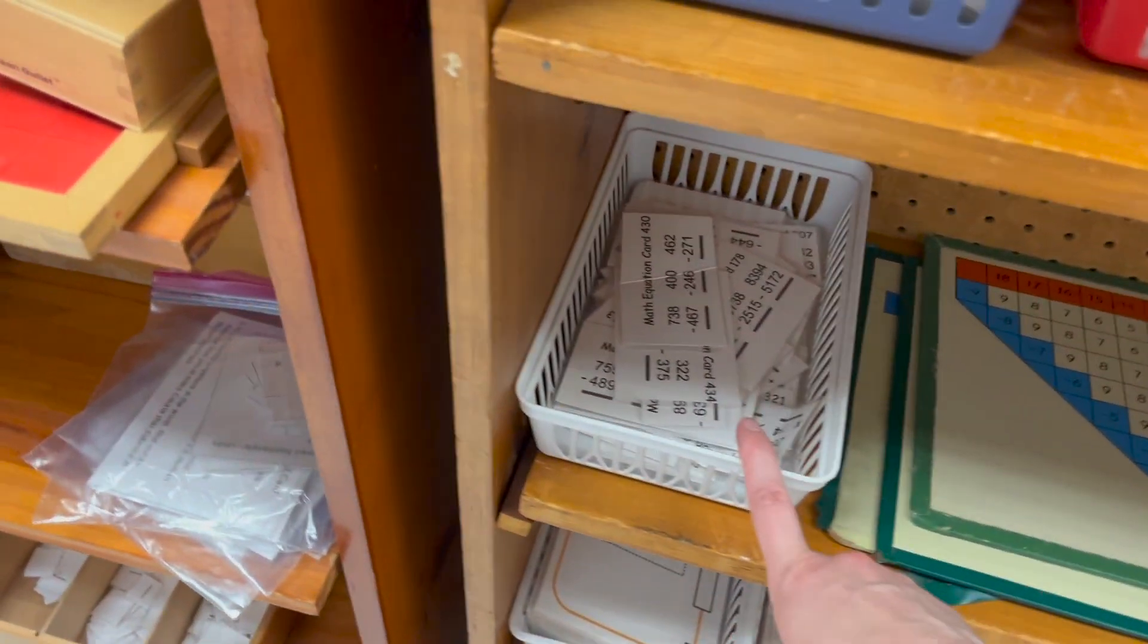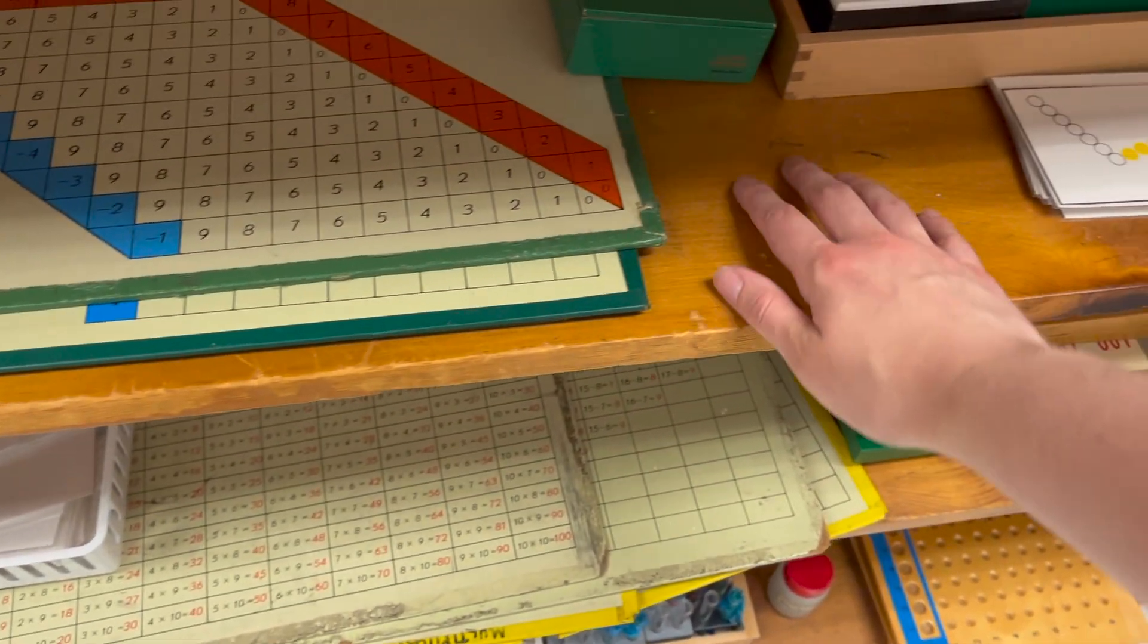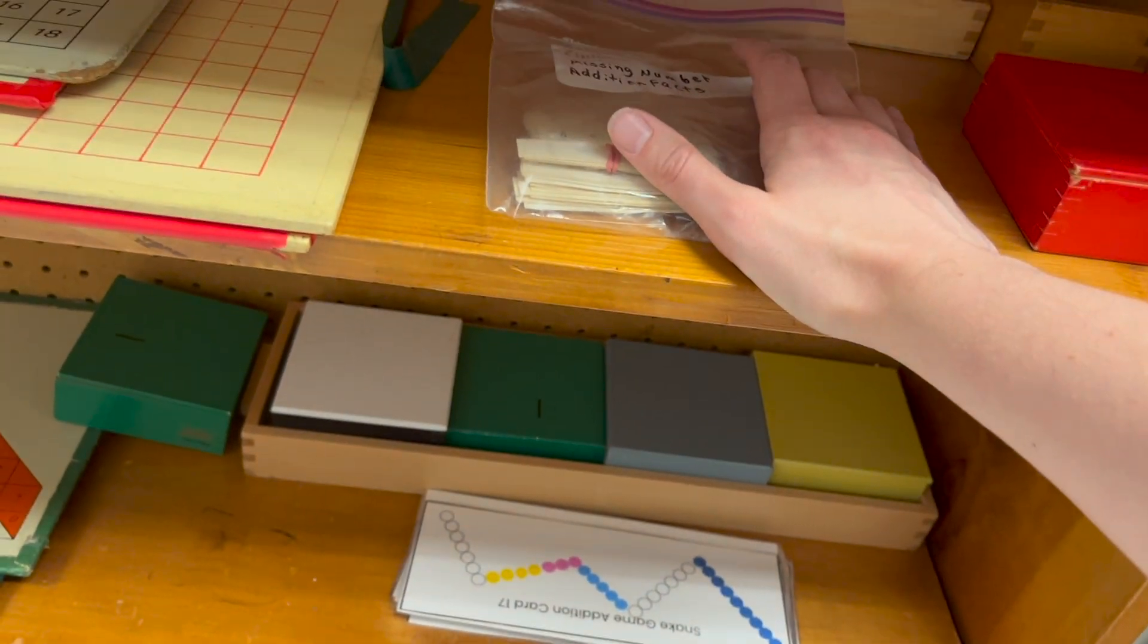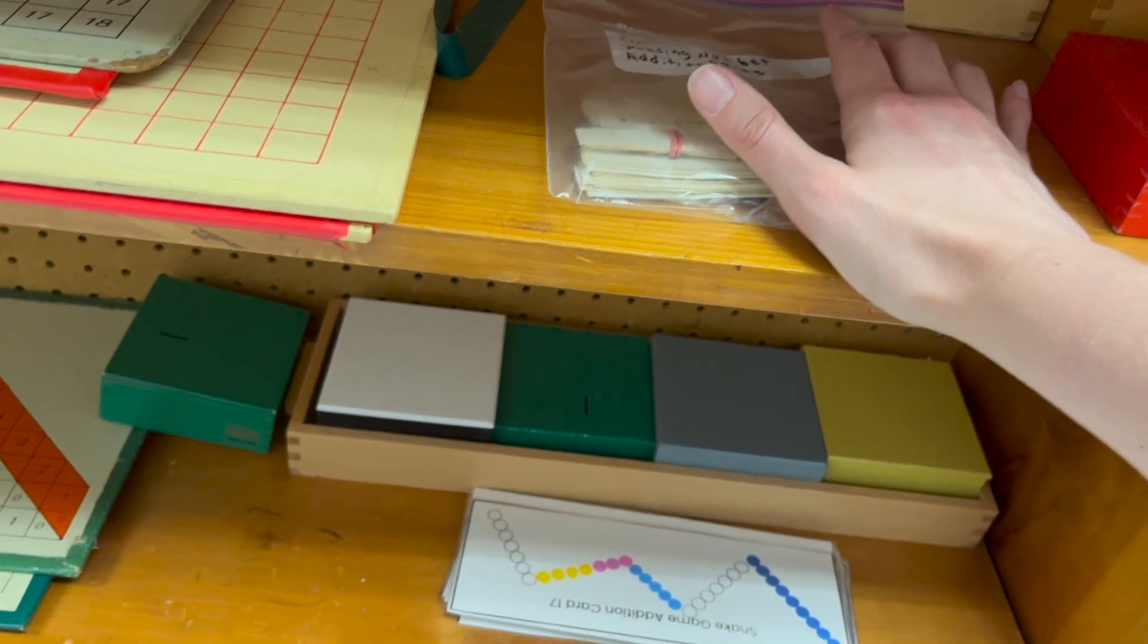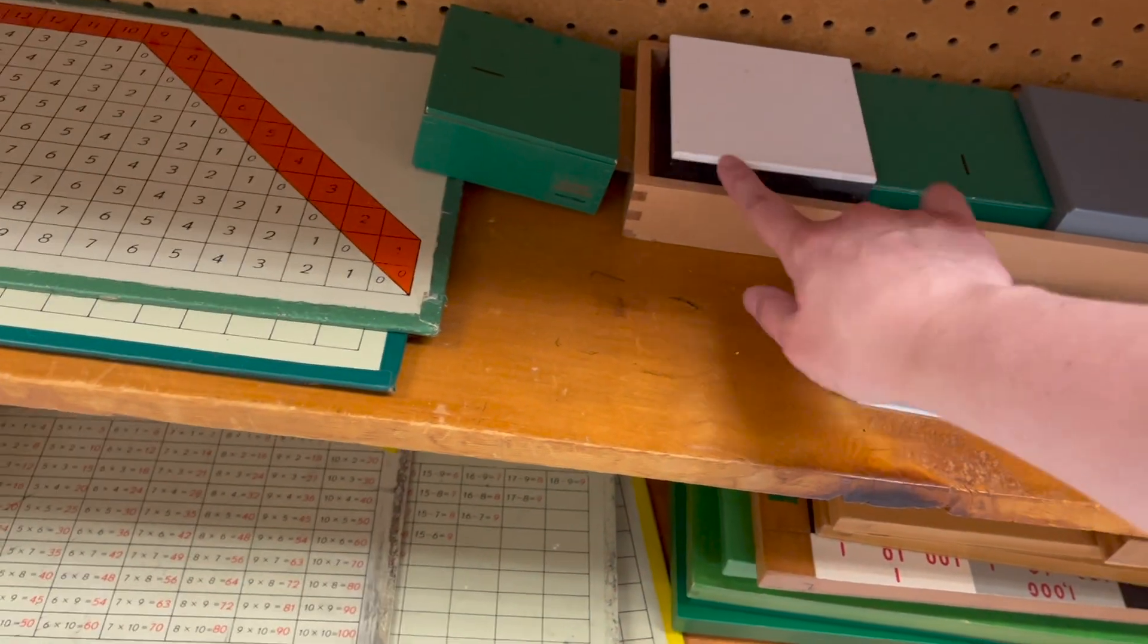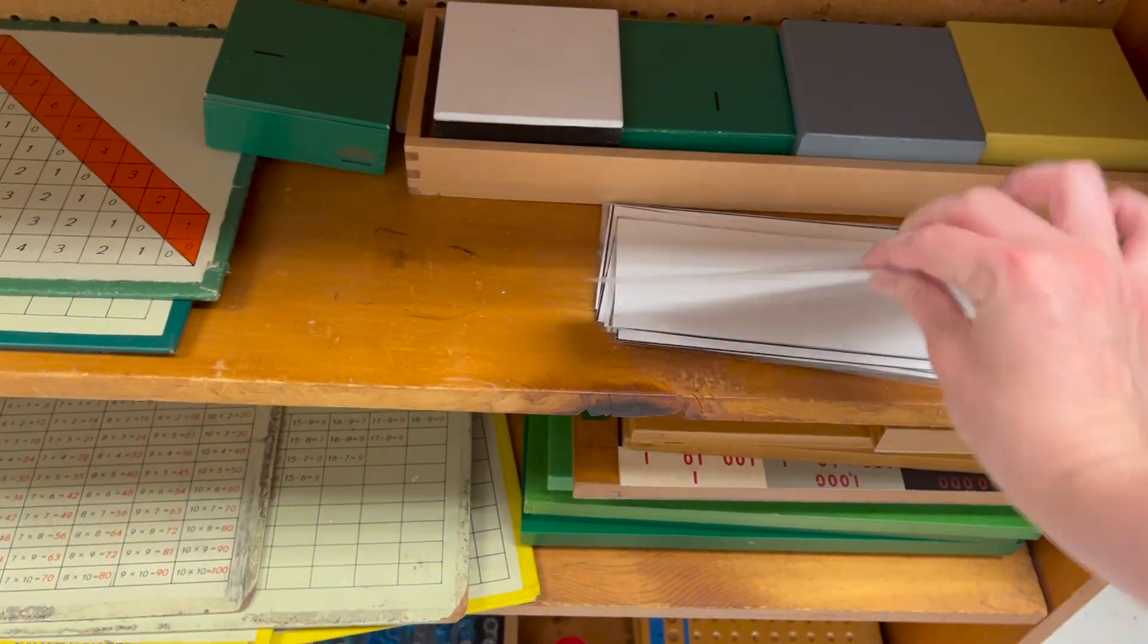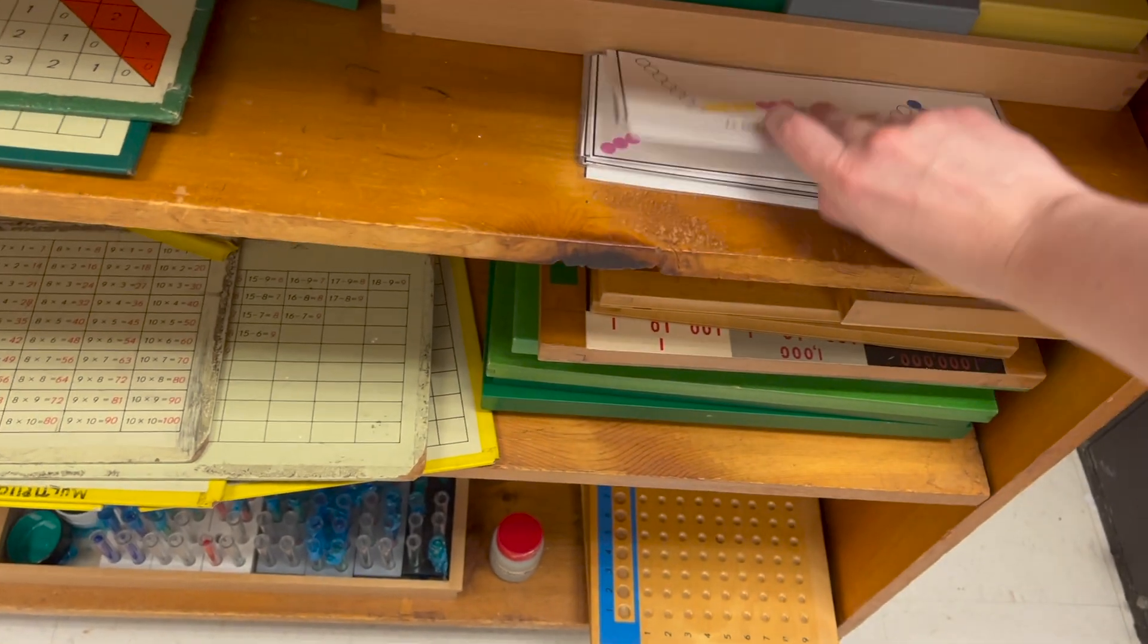And then we come to subtraction or subtraction cards, subtraction finger charts, loose equations, which there's more in the other drawer. And then I do have the addition snake game that goes usually up here, but a teacher, one of the early childhood teachers borrowed it, I believe at the end of the year. So I didn't get it back, but that's okay. Because they can also use the subtraction snake game and you could just flip this one out for that one. But these cards are in my paid for Montessori activities. If you want addition snake game cards.